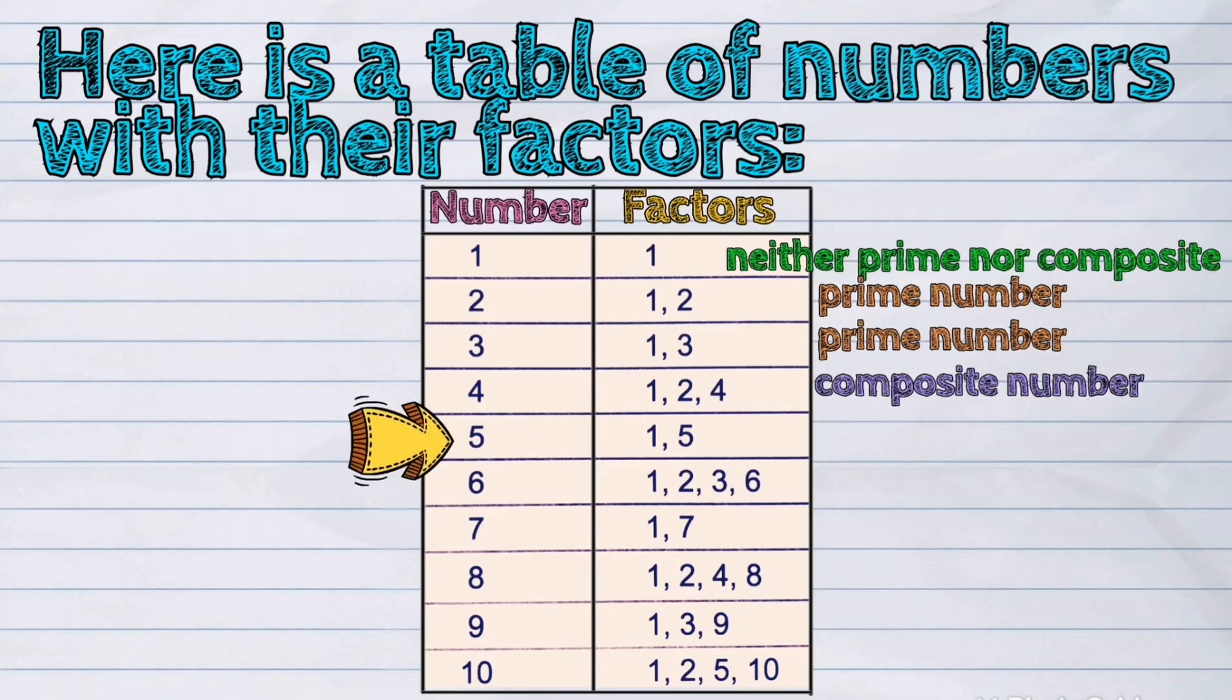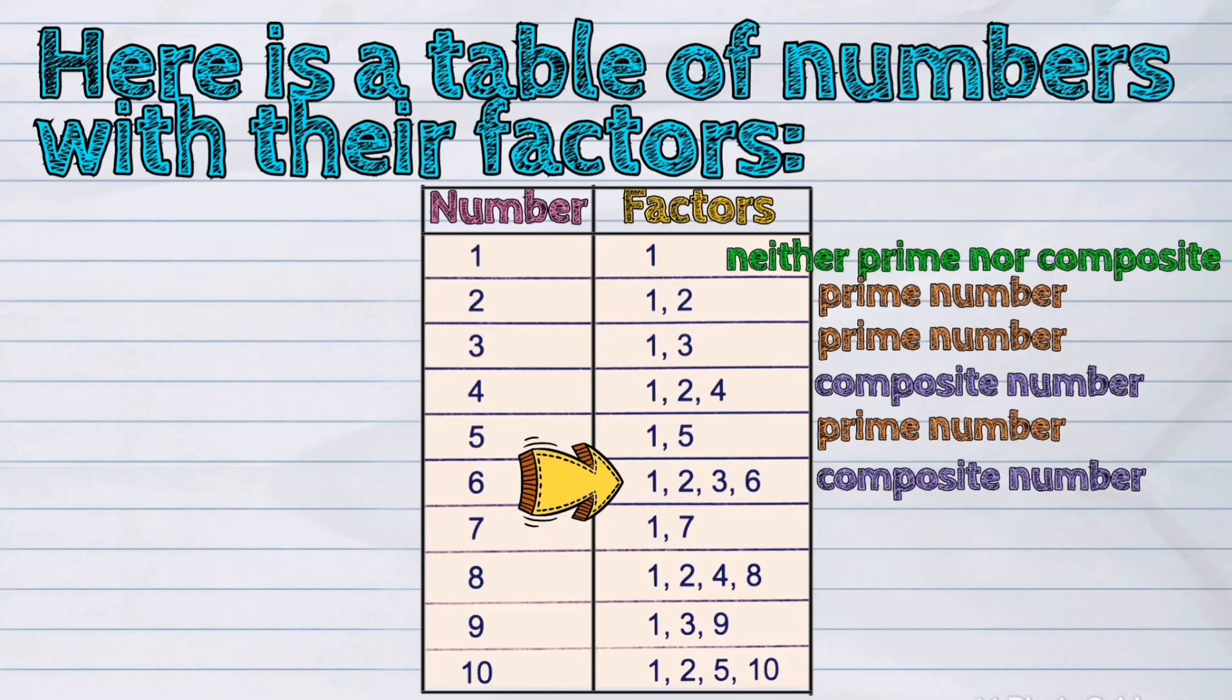Next is five. Again, it has two distinct factors, one and five, so it is a prime number. Six has four. Six is equal to one times six and two times three. So it is a composite number.